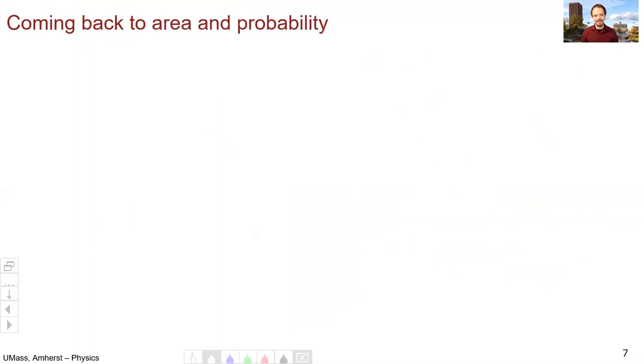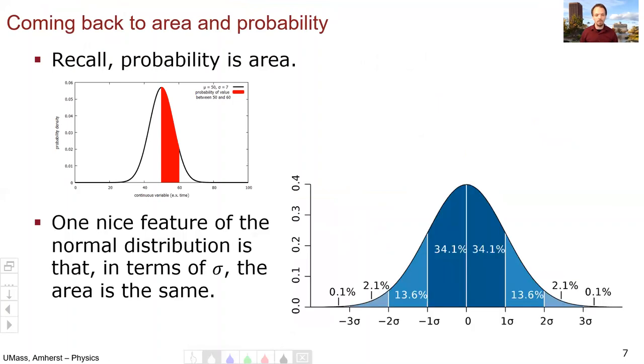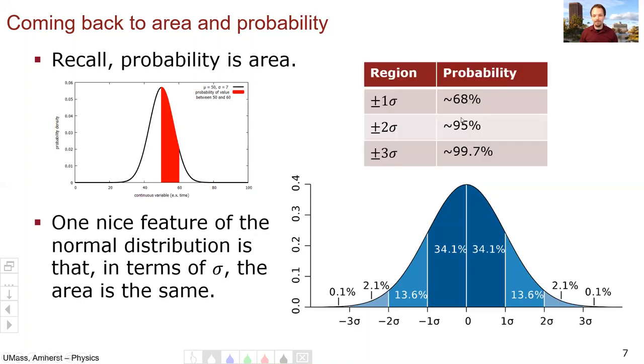Now let's come back to the ideas of area and probability. So remember, the area under the curve is the probability. So one nice feature of the normal distribution is that in terms of sigma, the areas are always constant. So here I have a normal distribution. Here's the center, the mean. If I'm within one standard deviation above or below, then we can expect a measurement plus or minus one sigma to occur about 68% of the time. We can expect it to occur within two sigma, about 95% of the time, and three sigma, 99.7% of the time.